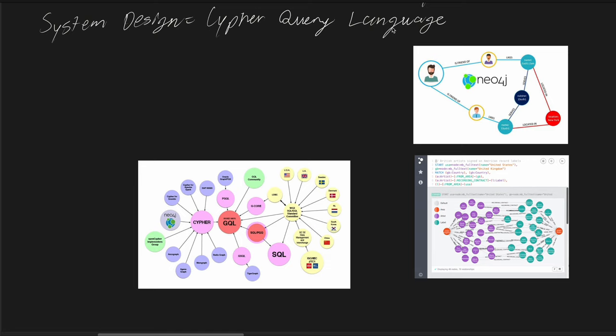So Cypher is considered the SQL for graphs. It's a declarative query language developed for navigating and manipulating property graphs, especially within Neo4j graph databases in particular.